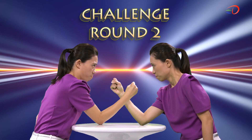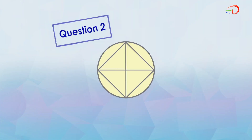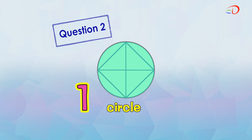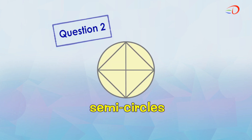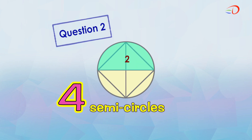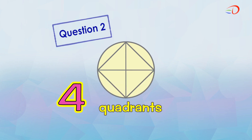Now, let's take another challenge. Using the same figure, what are the basic shapes we can find? Are you able to identify circles? Yes, there's one circle. Are you able to identify the semicircles? There are four: one, two, three, and four. There are also four quadrants in the figure: one, two, three, and four.